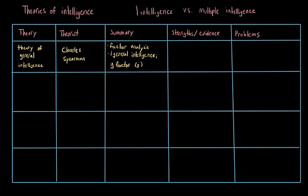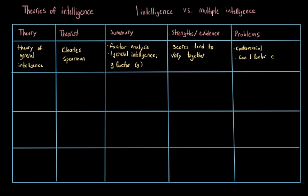There is actually a lot of evidence to support this, as studies have shown that those who score high in one area, like verbal intelligence, also tend to score highly in other areas, like spatial reasoning. However, this idea was controversial then and it's still controversial now. When you really think about it, human abilities are incredibly diverse — do we really think that one single factor could account for all of them?